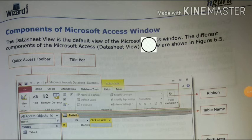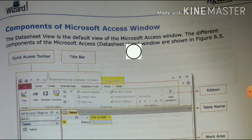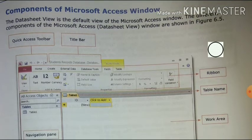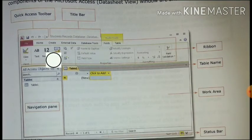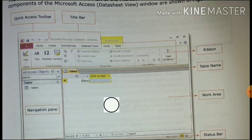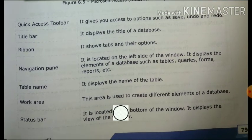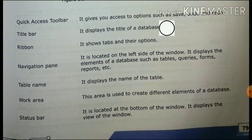Now let's look at the components of the Microsoft Access window. The Datasheet View is the default view. The components are: Quick Access Toolbar — gives access to options such as Save, Undo, and Redo. Title Bar — displays the title of the database. Ribbon — shows the tabs and options. Navigation Pane — located on the left side, displays elements of the database such as Table, Query, Form, Report, etc.